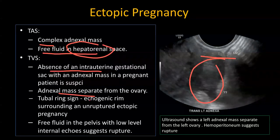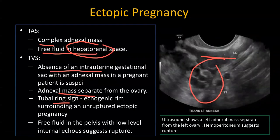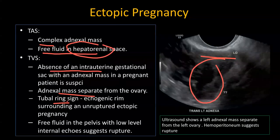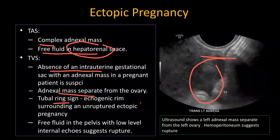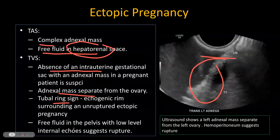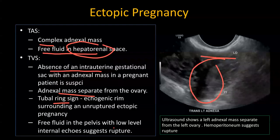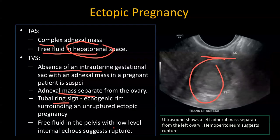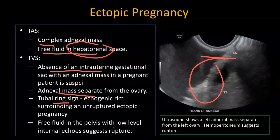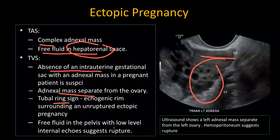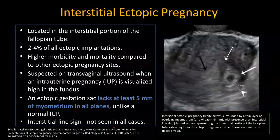The adnexal mass is separate from the ovary. The tubal ring sign is an echogenic rim surrounding an unruptured ectopic pregnancy, though it may not be seen in all cases. Free fluid in the pelvis with low-level internal echoes suggests rupture. When you see this on transvaginal ultrasound, make sure you go back and look at the hepatorenal space to rule out free fluid there, because that would mean significant bleeding.